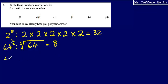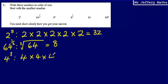Next, we've got 4 cubed. That's just going to be 4 times 4 times 4, which gives us 64. So 4 times 4 is 16, times 4 is 64.